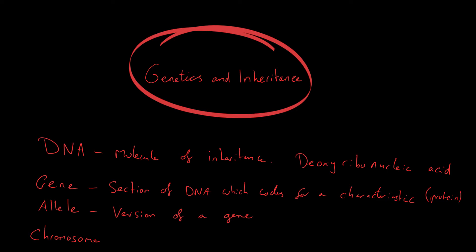An allele is a version of a gene. For example, the hair color gene is a section of DNA that codes for hair color, and each allele is a separate version giving you a different color — a blonde hair allele, a brown hair allele, and so on. A chromosome is a section of DNA which contains multiple genes. When a cell is dividing, you can see chromosomes under a microscope.